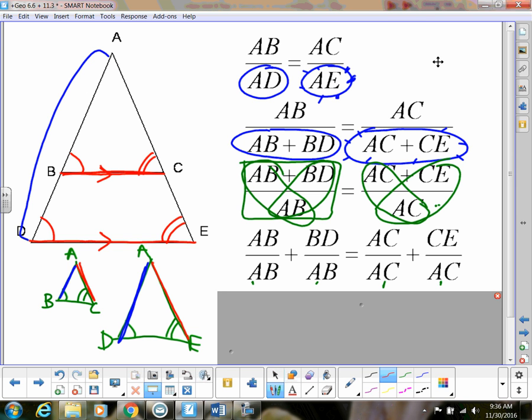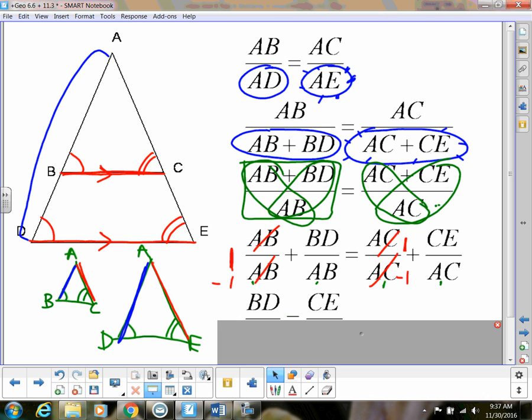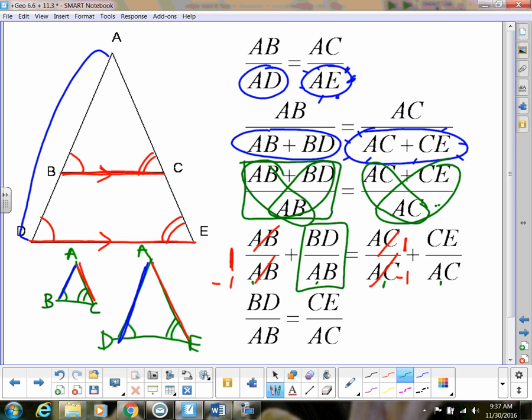look at what I have here. I have AB over AB. What is that? That's just the same thing as 1, right? So this is the same thing as 1. And then AC over AC, that's just the same thing as 1. So I have 1 on both sides of the equation that I can subtract. And then now I just have BD. So I have these left. BD over AB is equal to CE over AC.